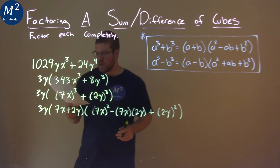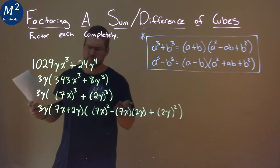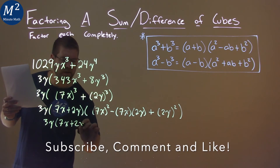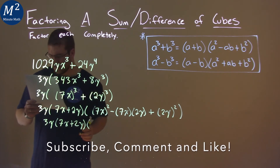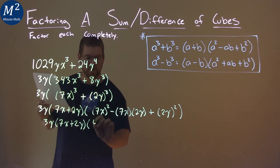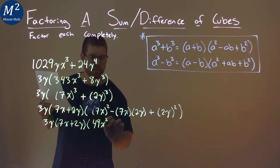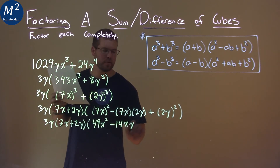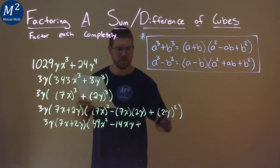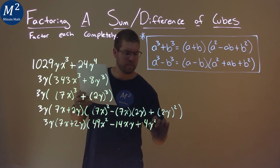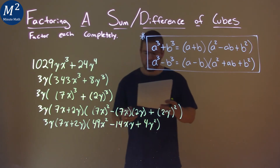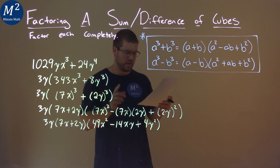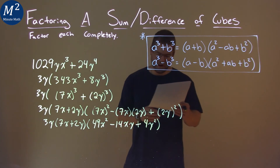That's a big problem, so now we just want to simplify. 3y and 7x plus 2y come down. 7x squared is the same as 49x squared. 7 times 2 is 14, so we subtract 14xy — don't forget the variables. And lastly, 2y all squared is 4y squared. So our final answer is 3y times (7x plus 2y) times (49x squared minus 14xy plus 4y squared).